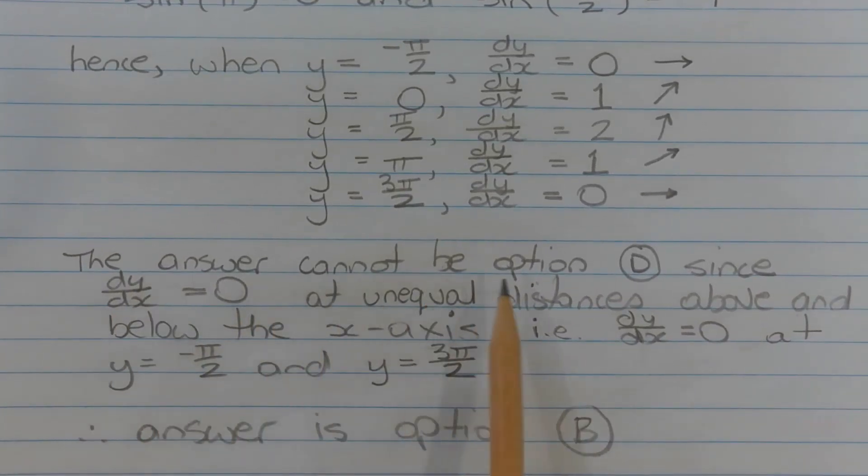The answer cannot be option D since dy/dx equals 0 at unequal distances above and below the x-axis, that is dy/dx equals 0 at y equals negative pi over 2 and y equals 3 pi over 2. Therefore, the answer is option B.